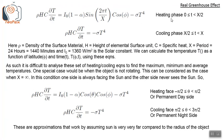In these heating and cooling phase equations, rho is the density of the surface material, h is the height of the elemental surface unit, c is the specific heat, and x is the period — considered 24 hours in the case of Earth. I₀ is the solar constant, 1360 W/m². We can calculate the temperature T as a function of latitude phi and time t using these heating and cooling phase equations.